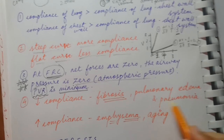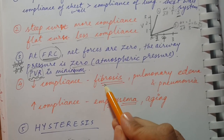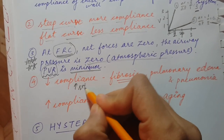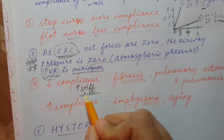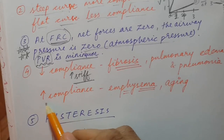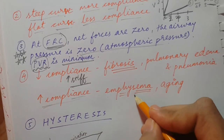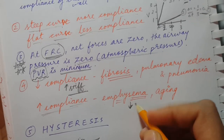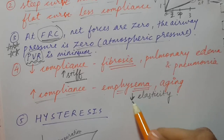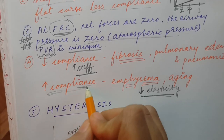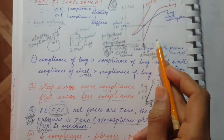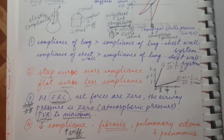A few conditions that decrease compliance: fibrosis, pulmonary edema, and pneumonia — in all these cases there is an increase in stiffness, and as stiffness increases, compliance decreases. In emphysema and aging, compliance increases because elasticity decreases in both conditions. So: decreased elasticity → increased compliance; increased stiffness → decreased compliance.